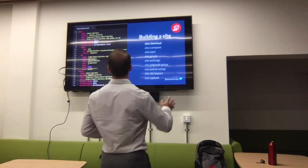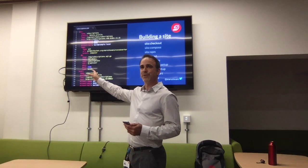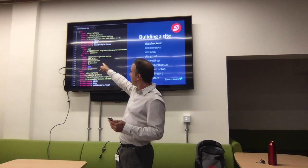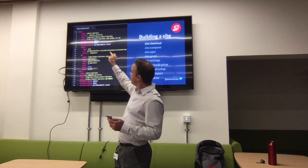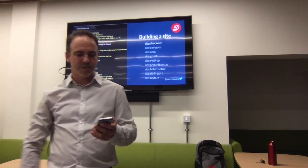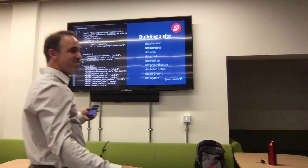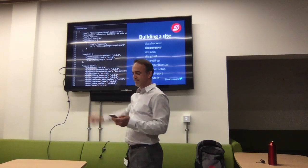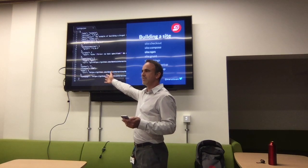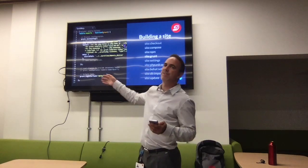The checkout command — when you run it, it will use information from the YAML file. This is the site YAML that sits inside the folder. You use the repo URL and branch given in there, and it's going to check out that branch into the specified folder. Then you have the composer command, which runs the composer.json on the site. Then npm, which finds the package.json and runs it. Then the grunt command, which finds the grunt file and runs it.